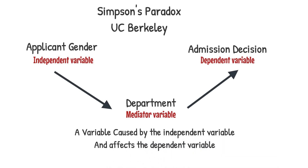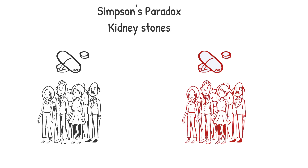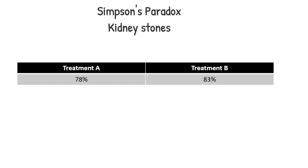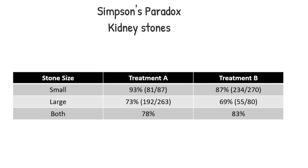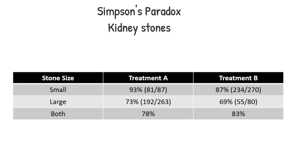Let's take another use case to understand the paradox. A medical experiment was comparing the success rates of two treatments for kidney stones. The experiment divided the patients into two equal groups, each of 350 patients. It was found that the overall success rate of treatment A was 78%, and the overall success rate of treatment B was 83%. The experiment result was that treatment B is better than treatment A as it had a higher overall success rate.